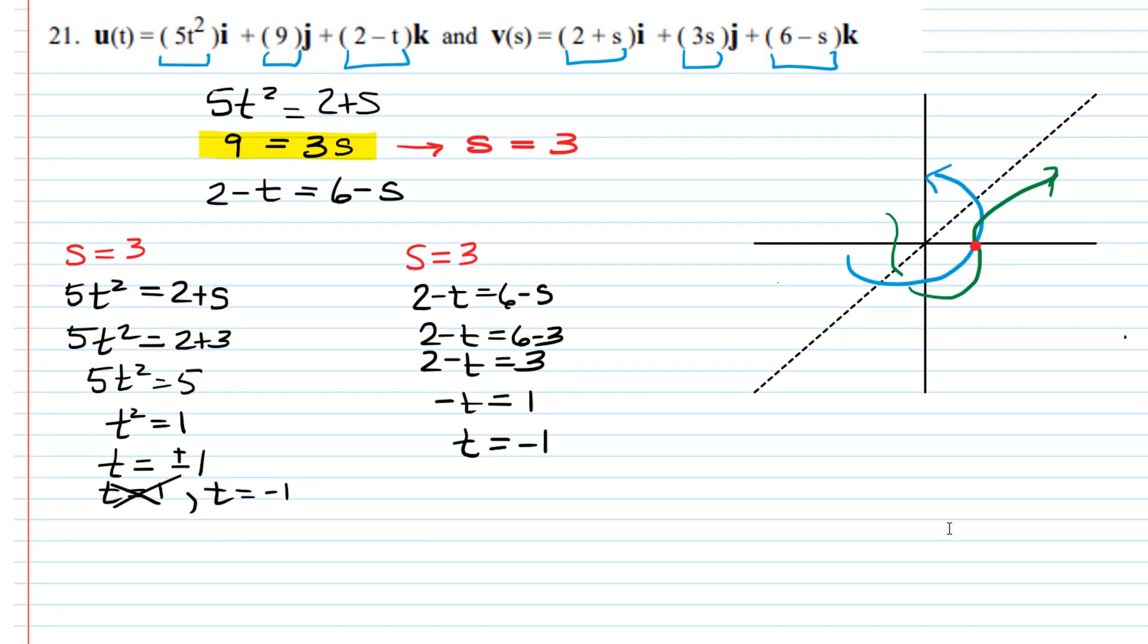So what that's telling us is that our parameters s and t have to be 3 and negative 1 respectively in order to have an overlap. Where would they overlap? Well, so u of negative 1 is going to be 5 times negative 1 squared i plus 9j plus 2 minus negative 1 times k. Or in other words, that's going to be 5i plus 9j plus 3k.